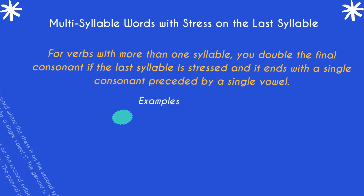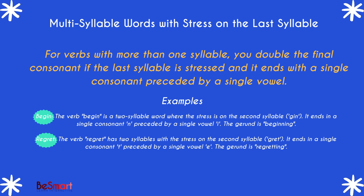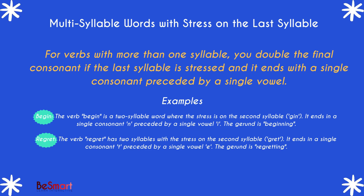The second rule applies to multi-syllable words. If the verb has more than one syllable, you double the final consonant if the last syllable is stressed and it ends with a single consonant preceded by a single vowel. For instance, begin becomes beginning and regret becomes regretting. It's important to note the stress on the last syllable when applying this rule.